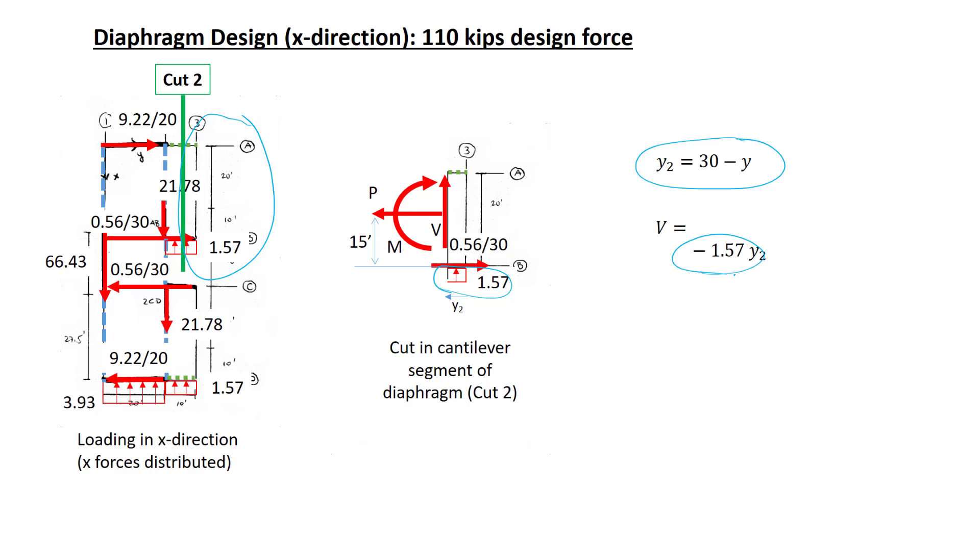The moment equation is similar to before with fewer terms because there are fewer forces. We'll sum moments about the cut and specifically about the line of action of the axial force. The distributed load of 1.57 is multiplied by y2 to get the resultant. The location of that resultant is at y2 over 2. Combining that gives us this first term, 1.57y2 times y2 over 2, or 1.57y2 squared over 2. The second term comes from that distributed load at the bottom edge of the diaphragm segment. 0.56 over 30 times y2 is the magnitude of the resultant. Multiplied by 15 feet is the moment arm for that force. This gives us now an expression for moment over the cantilevered segment of the diaphragm. One could do another cut over the other diaphragm segment and show that these two equations are valid for both cantilever segments.